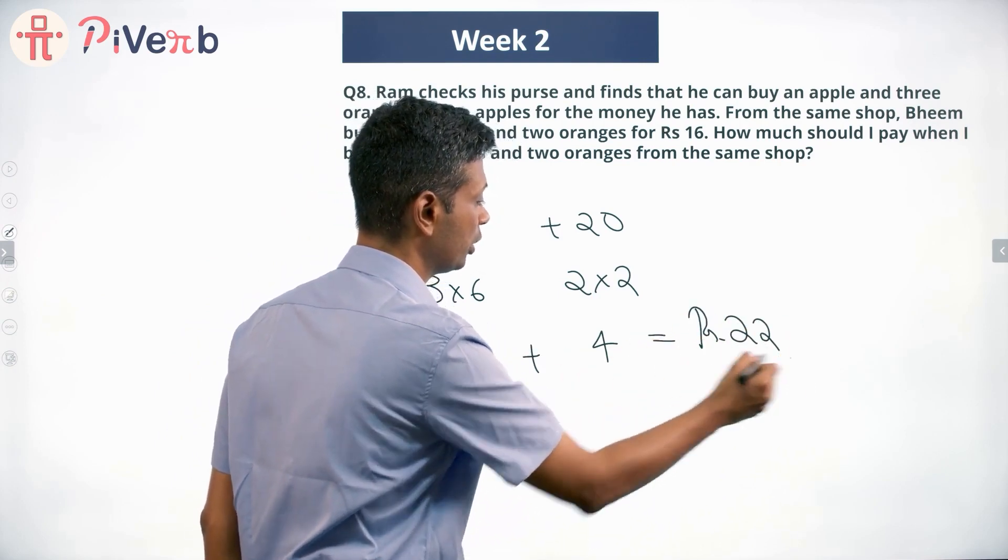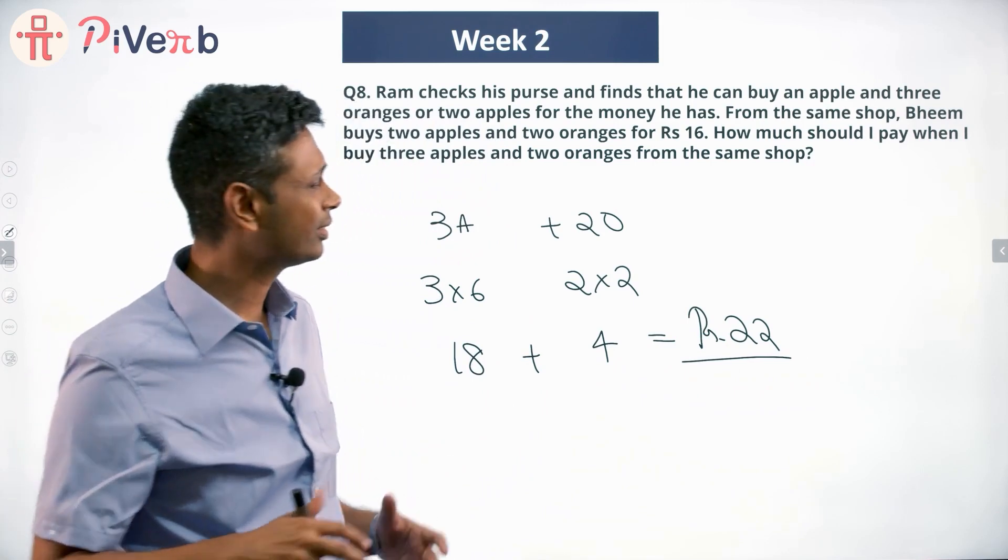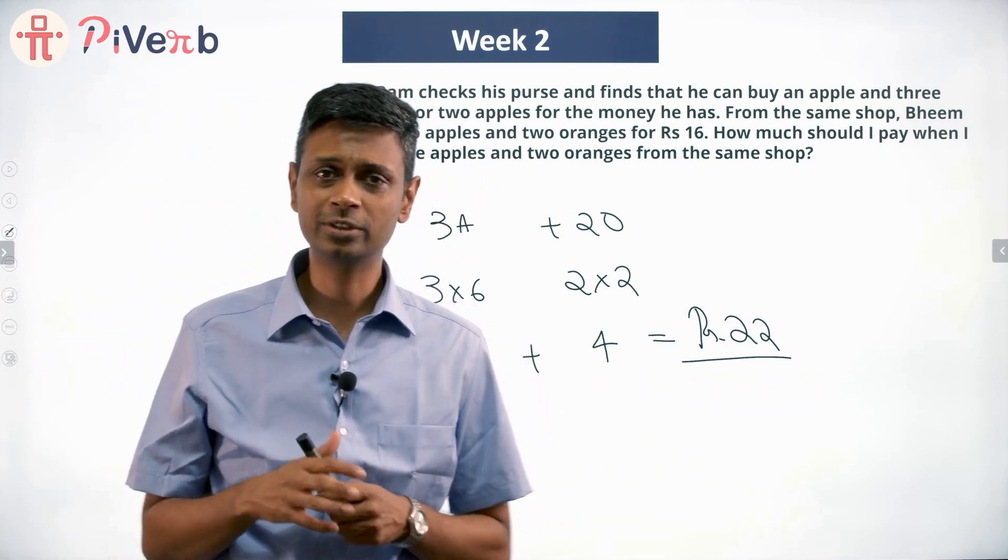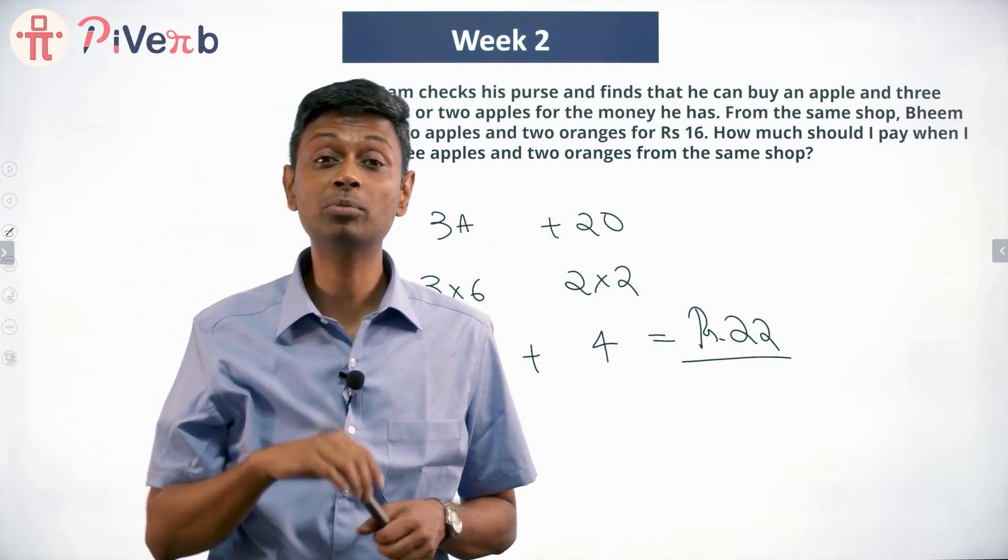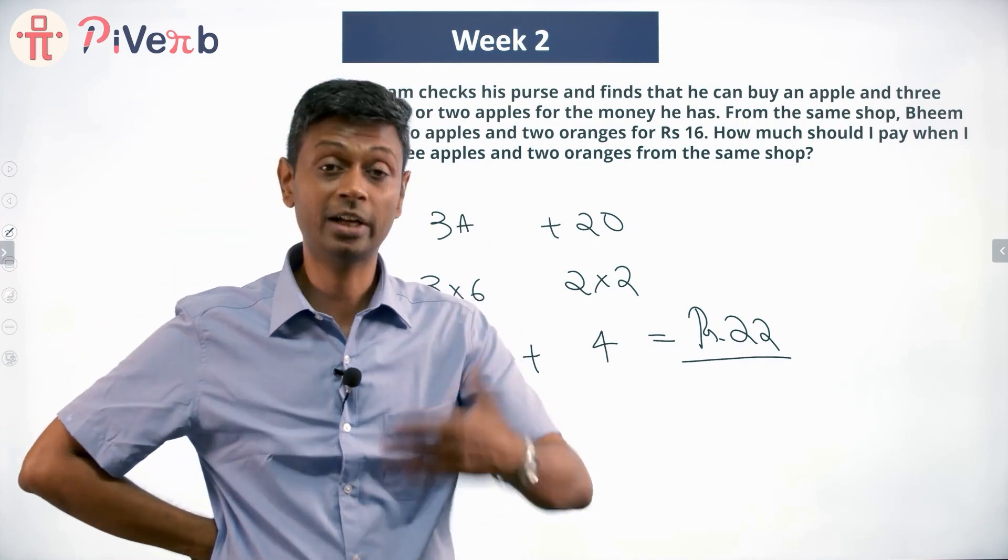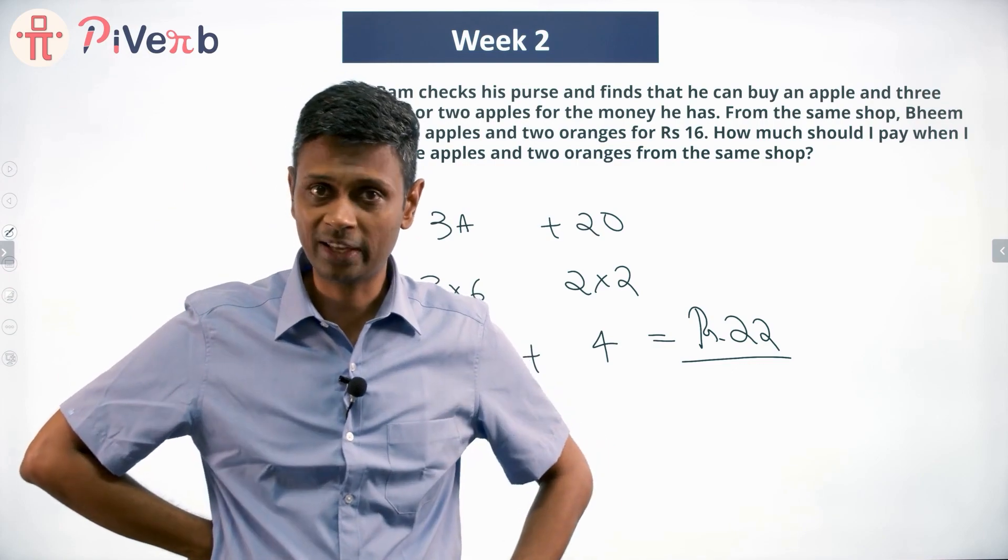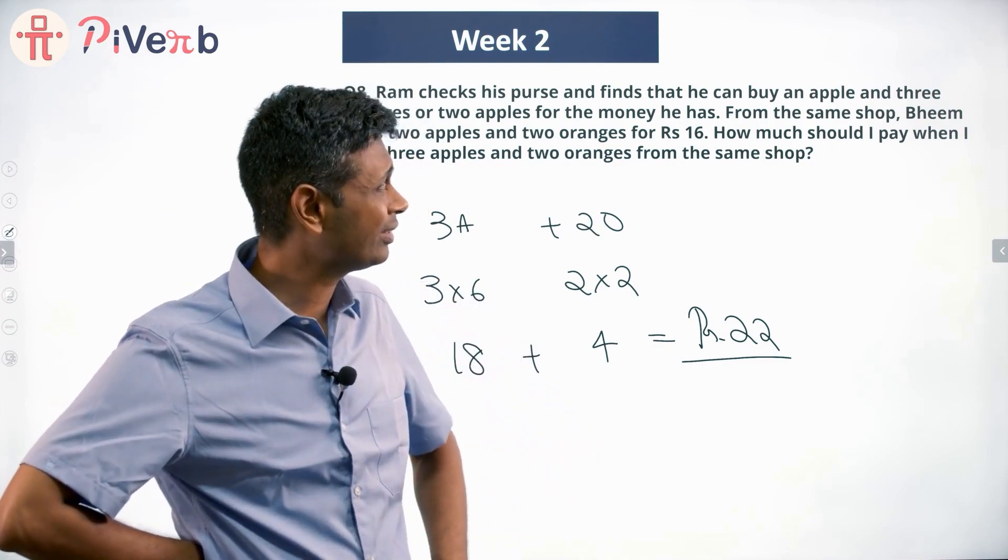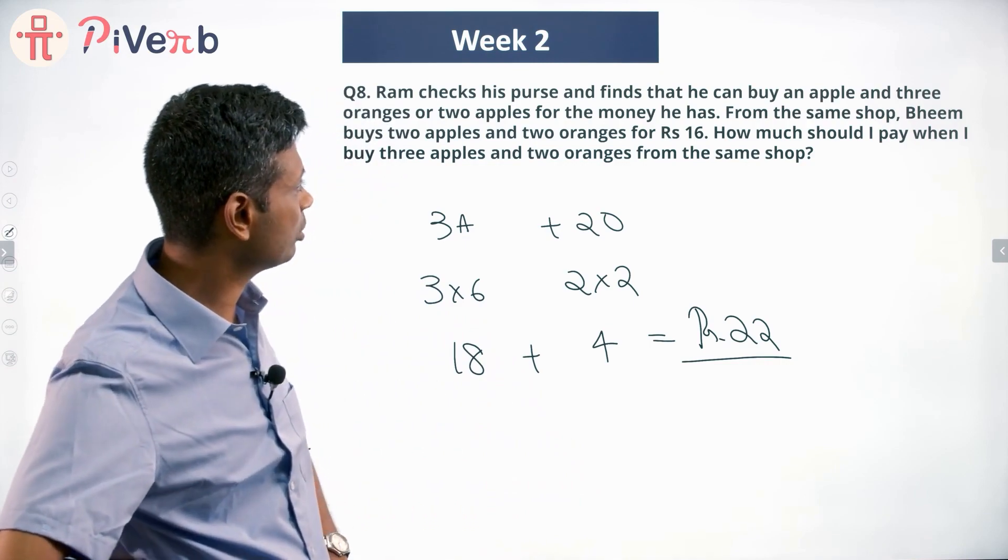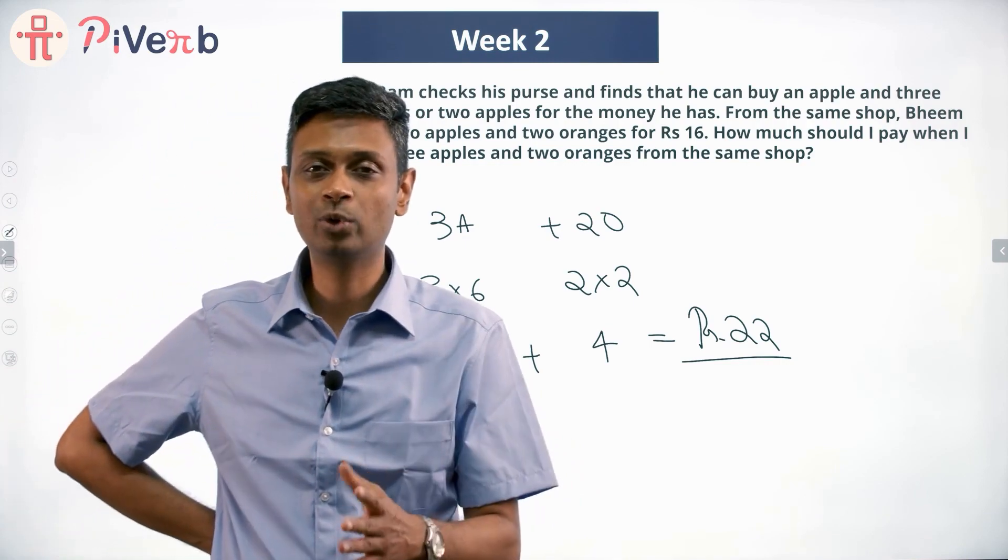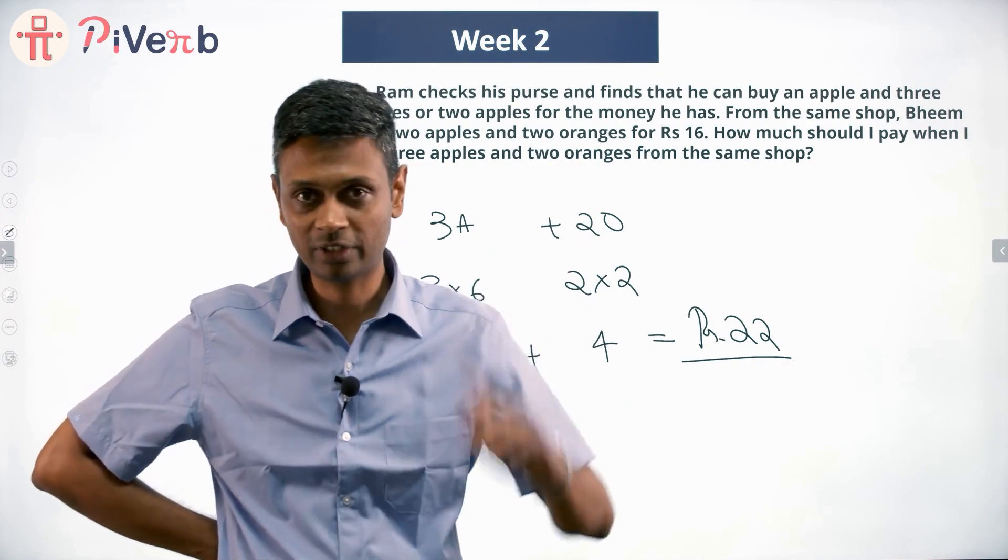Or it will cost 22 rupees. This is equation manipulation - linear equations to manipulate them. You'll find several forms of algebraic manipulation, and you'll learn that more and more when you go to higher classes. But before that, you can just sense patterns even without doing all that. Two apples cost something, one apple and three oranges cost something else - straight away you know one apple costs the same as three oranges, and then you're done.